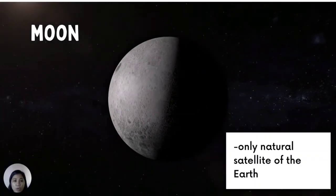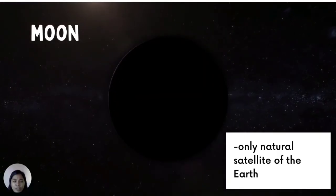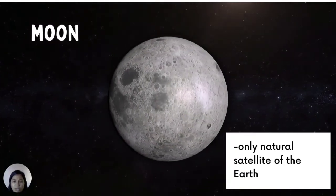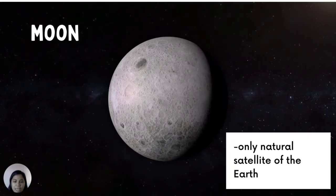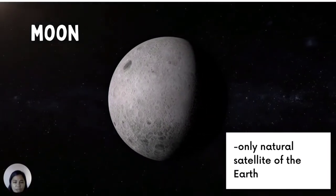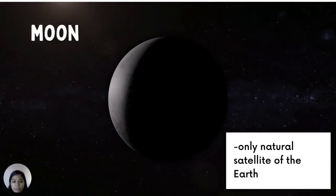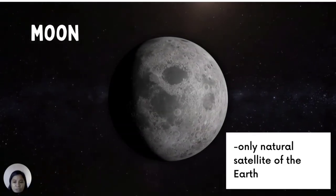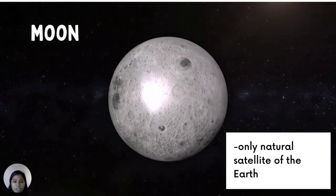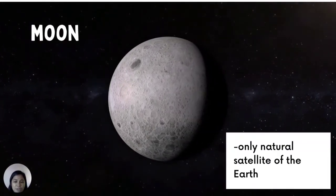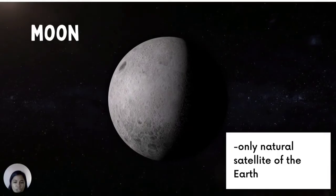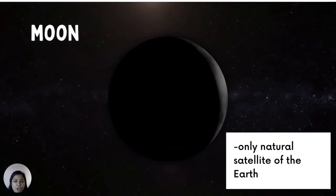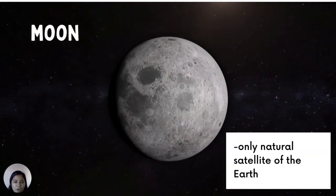The moon is the only natural satellite of the earth. A satellite is an object that revolves around larger objects. The moon does not produce its own light; it only reflects the light coming from the sun. Since the moon is revolving around the earth, the amount of light it reflects from the sun varies as it changes its position, and the moon's appearance changes from time to time because the lighted portion of the moon changes as it moves around the earth. This obvious change in the appearance of the moon is known as the phases of the moon.